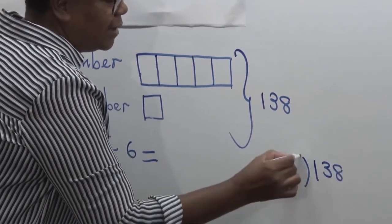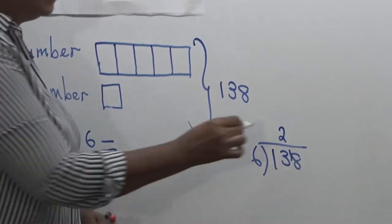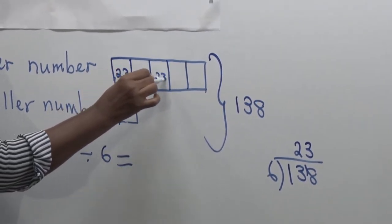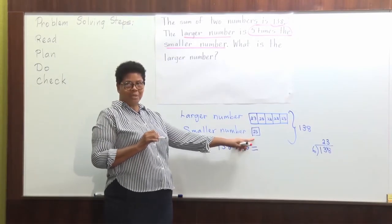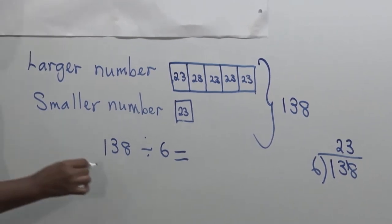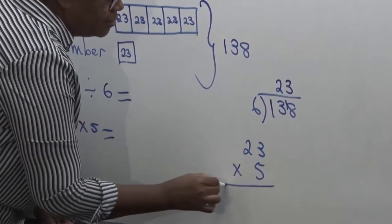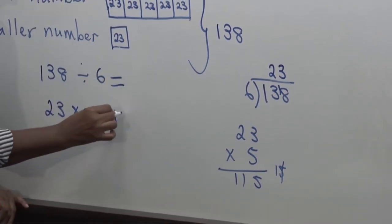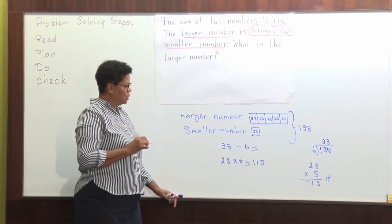138 divided by 6: 13 divided by 6 is 2, regroup 1, 18 divided by 6 is 3. So in each one of my parts I have 23. So right away I can see that my smaller number is 23, and my larger number is 23 multiplied by 5. 23 multiplied by 5: five threes are 15, five twos are 10 plus one is 11. The answer is 115. So the larger number is 115.